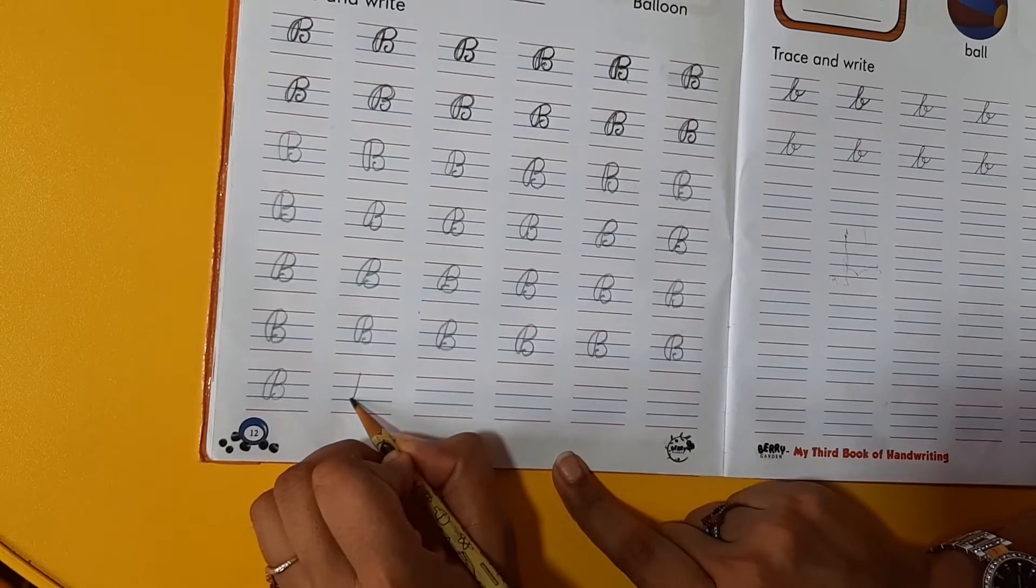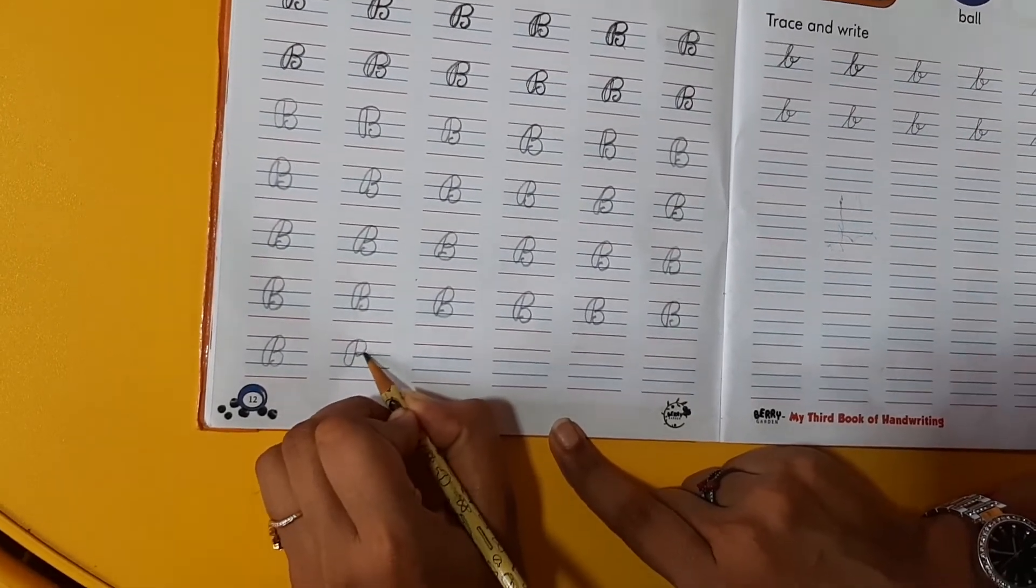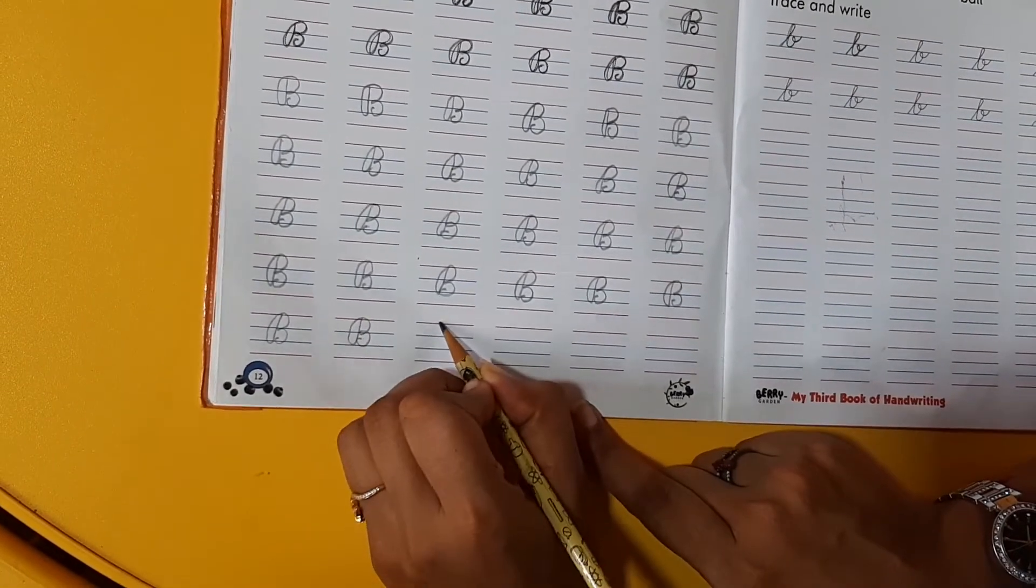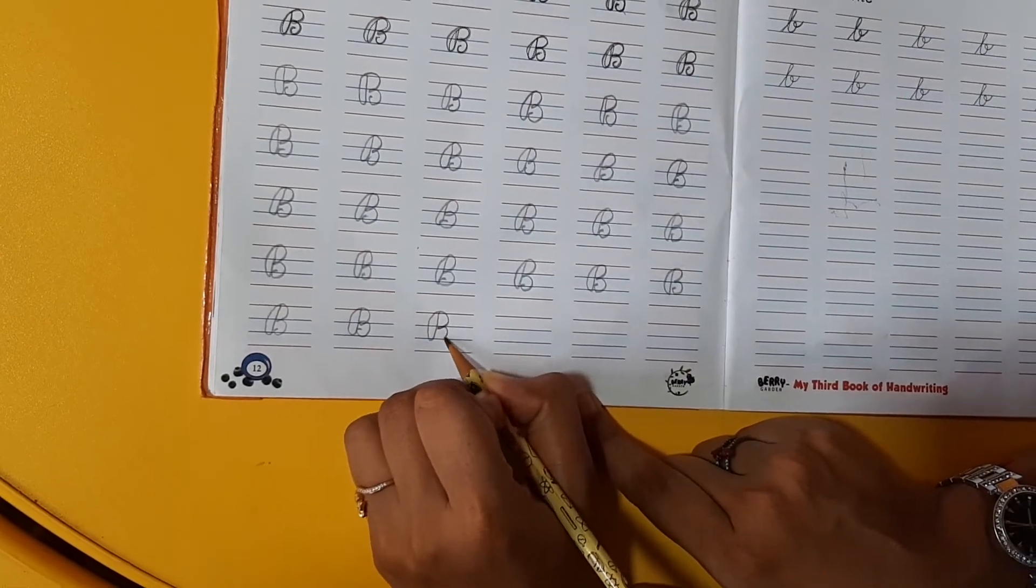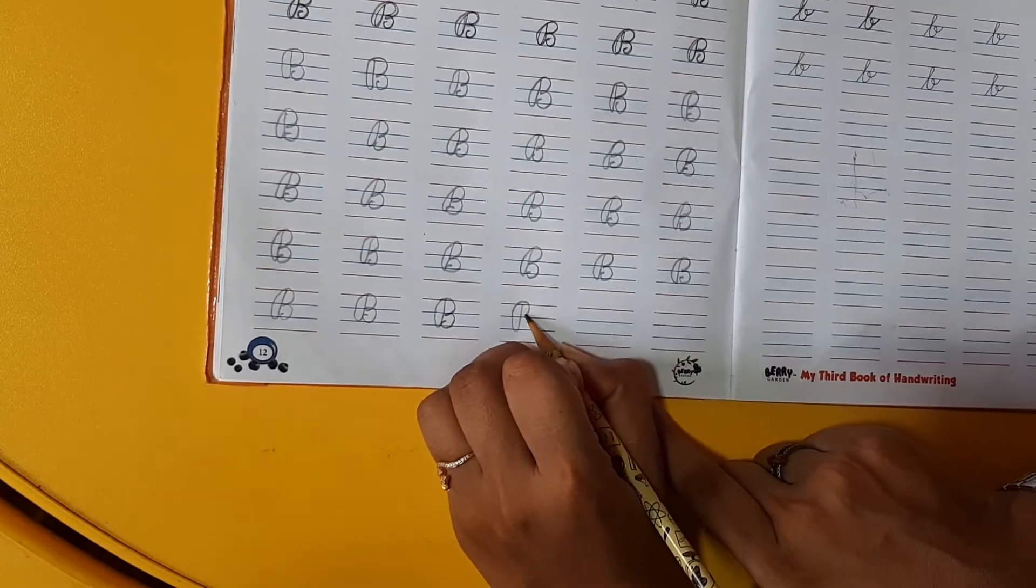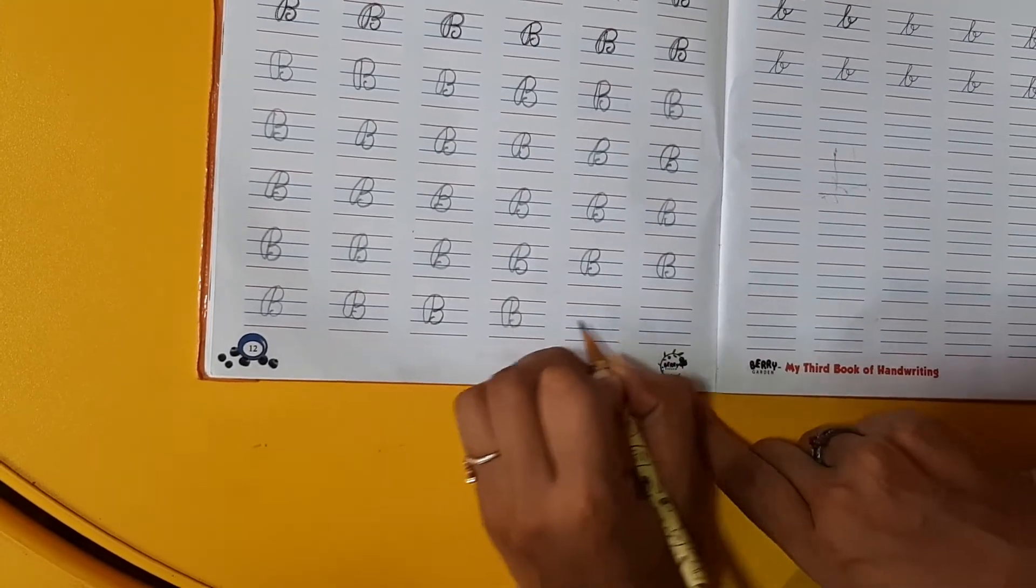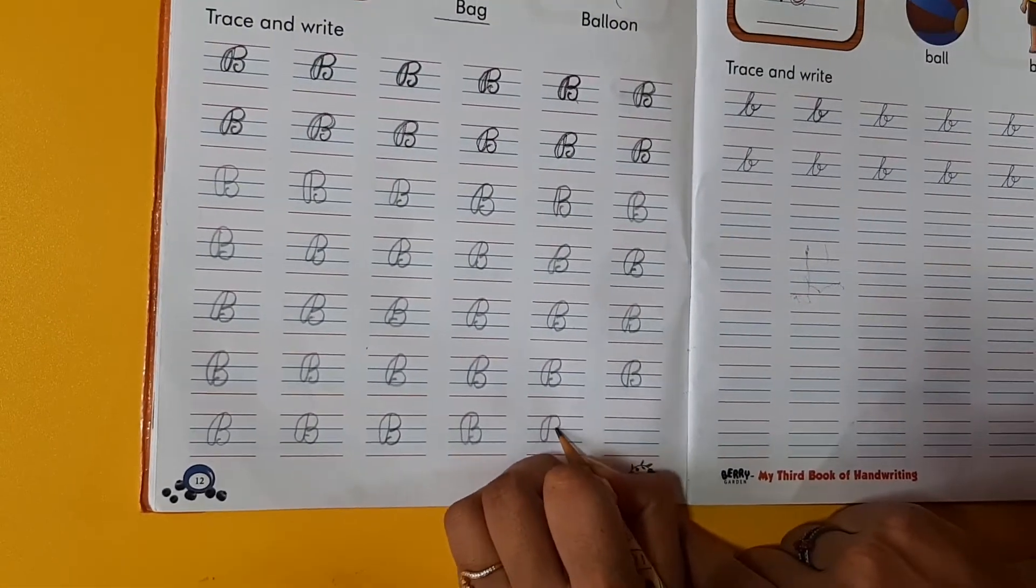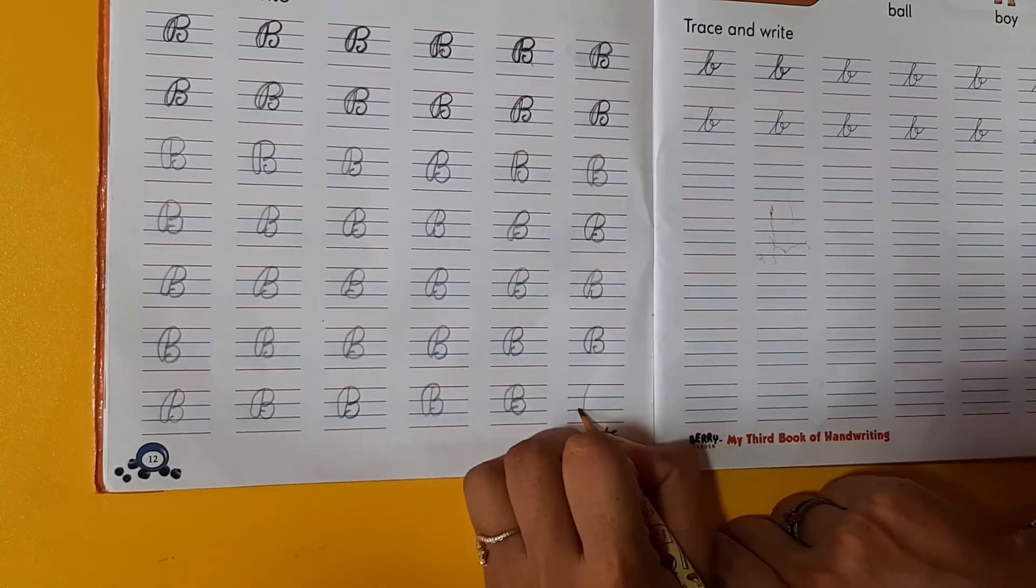Yes. Aak sab ko healthy hoonne ke liye kya khana hai rose? One banana. Yes. B for banana. Yay. Aak chhi hoonne. Humne kitnye achche se letter B ko trace kiya hai. Yes. We all have done really good job.